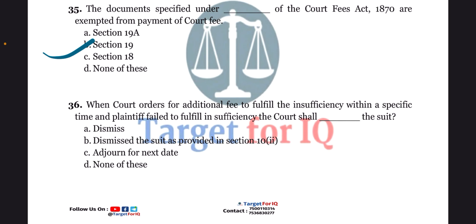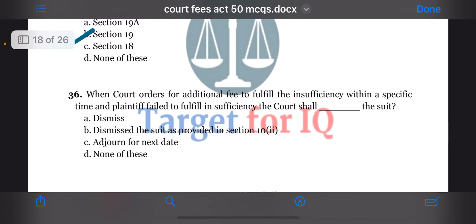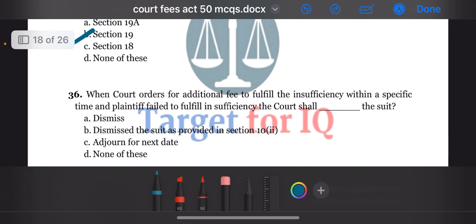Next question: when court orders for additional fee to fulfill the insufficiency within a specific time and plaintiff failed to fulfill insufficiency, the court shall dash the suit. The options are A. Dismissed, B. Dismissed the suit as provided in section 2, clause 2, C. Adjourned for next date, or D. None of these. The correct answer is option B.